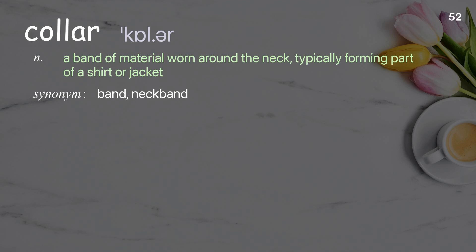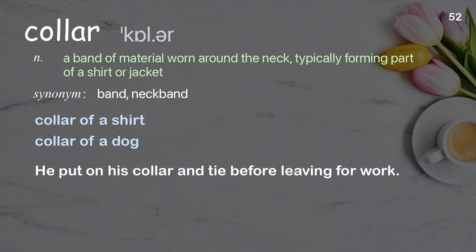Collar: a band of material worn around the neck, typically forming part of a shirt or jacket. Examples: collar of a shirt; collar of a dog. He'd put on his collar and tie before leaving for work.